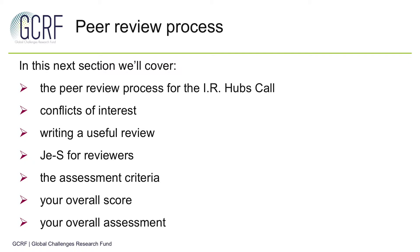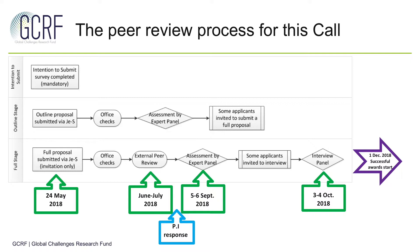Just to help you orientate yourselves, this is an idea of the timeframes we're working with for this call. The full proposal call is closing in a few days time where applicants will submit their proposals. Following that we'll take a number of administrative checks before sending the proposals out to you for peer review. You'll receive official invitations through our JeSS system between June and July. Those reviews will go out to the applicants themselves to comment on before your reviews and their responses go to the assessment panel in September. Following that, a selection of proposals will be taken forward to the interview stage in October where final decisions will be made about which proposals to fund.